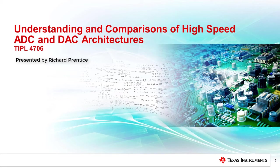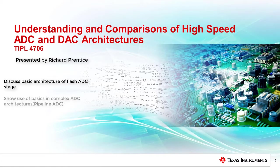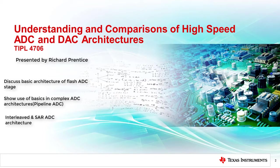Hello, and welcome to the TI Precision Lab discussing architectures of high-speed A-to-D converter and D-to-A converter devices. First, we will discuss the basic architecture of a flash A-to-D converter stage, and then show how that basic stage is used as the core structure in more complex A-to-D converter architectures, such as a pipelined A-to-D converter. Interleaved A-to-D converters are discussed, as well as successive approximation A-to-D converters. Finally, the basic D-to-A converter core architecture is presented.